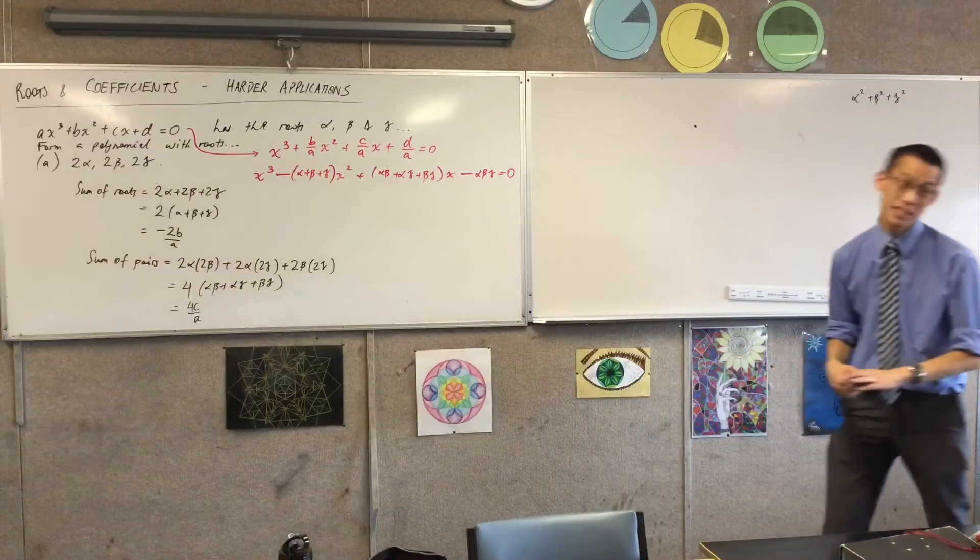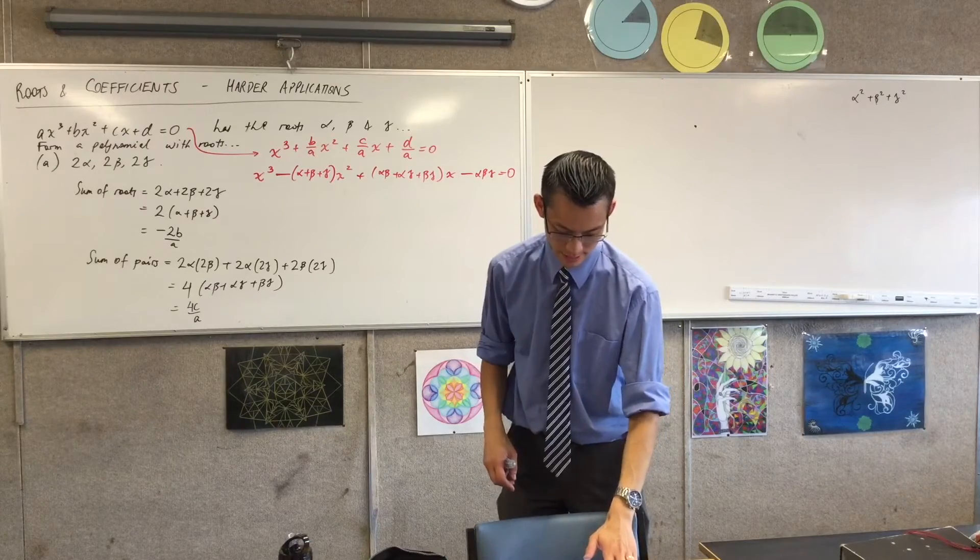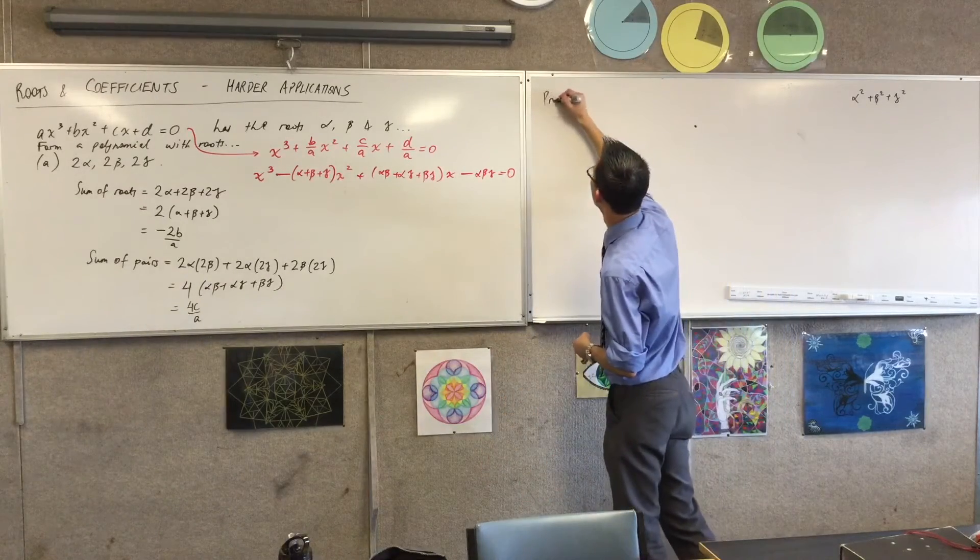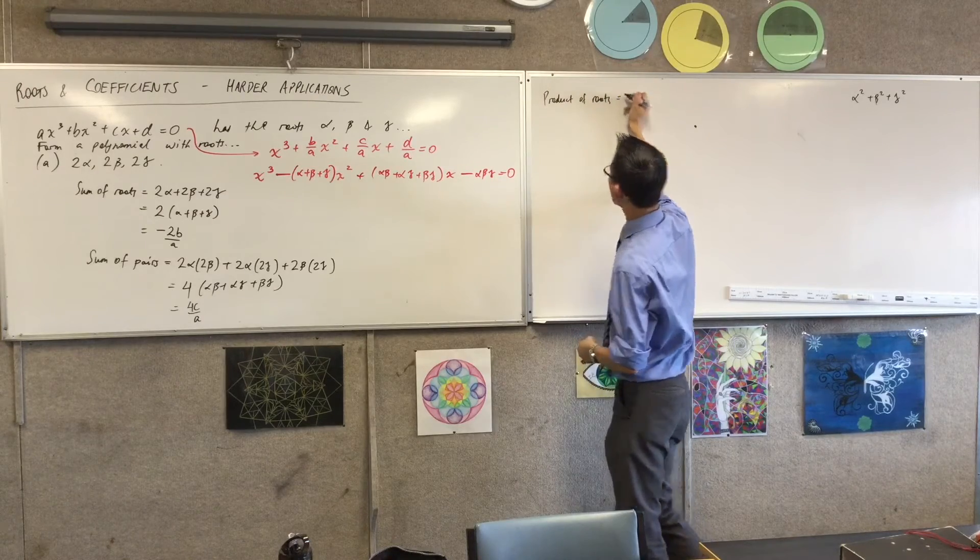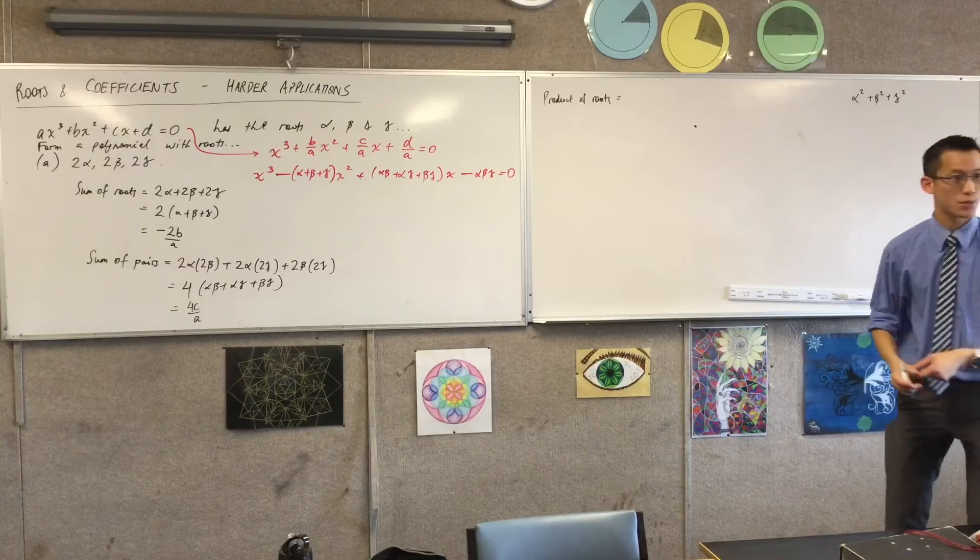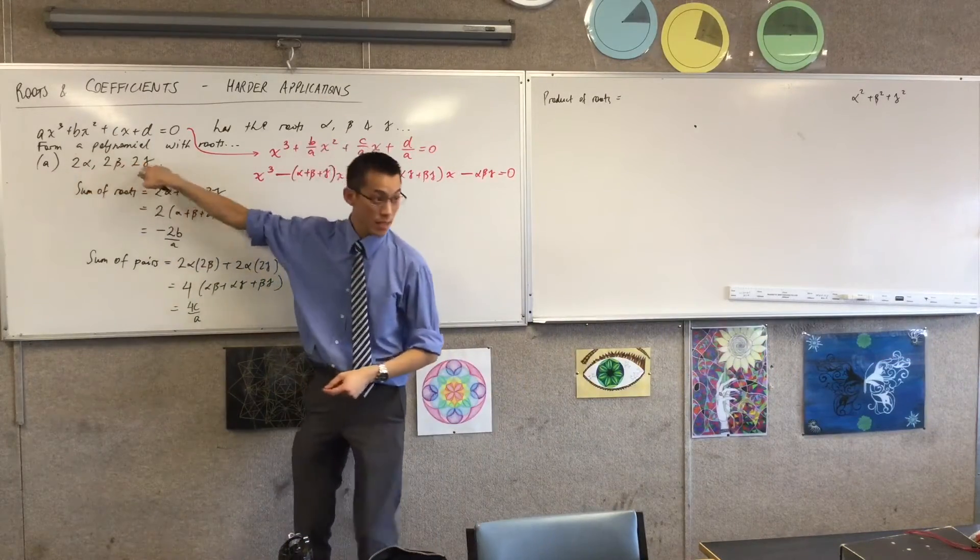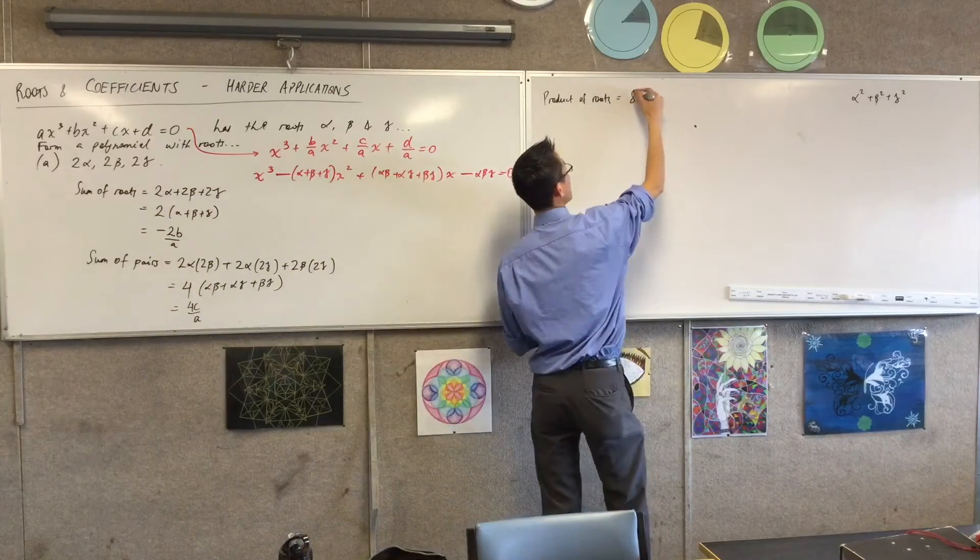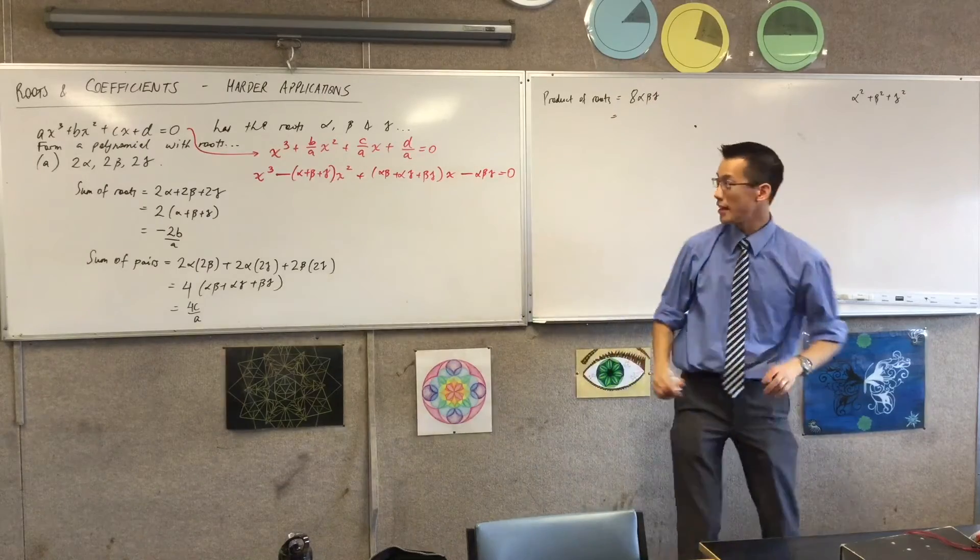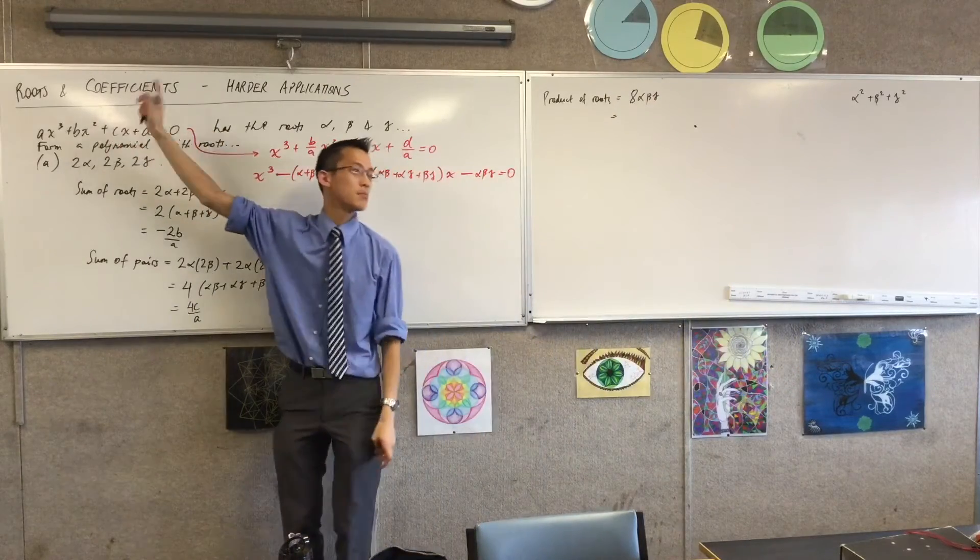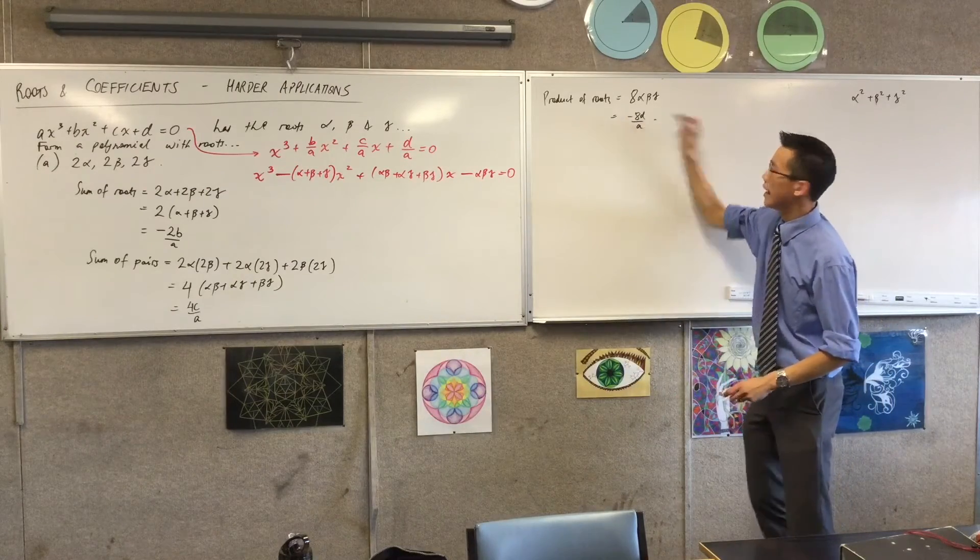Now again, this is useful, because I already know what the sum of pairs of roots should be. Based on the original equation, it's just going to be C on A. So putting that together with the 4, I'm getting 4C on A here. Can you go ahead, can you do the product of roots? It's actually the easiest one. You can probably do it in one line. What is that product of roots? Alpha beta. 8 alpha beta gamma. Yeah. So it's this times this times this, which is in fact 2 cubed alpha beta gamma. But we know what alpha beta gamma is from the original equation. It's minus D on A. So that gives me minus 8D on A.